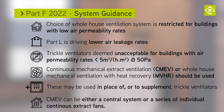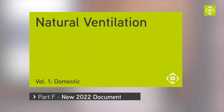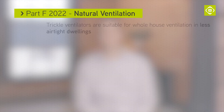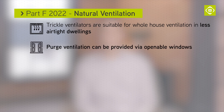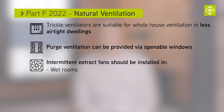Continuous mechanical extract ventilation can be a centralised system or a series of individual continuous extract fans in place of intermittent extract fans. For less airtight dwellings, whole house ventilation can be achieved using trickle ventilators rather than continuous mechanical extract ventilation. Purge ventilation can be provided by openable windows. Intermittent extract fans should be provided to wet rooms, utility rooms, bathrooms, kitchens and sanitary accommodation.